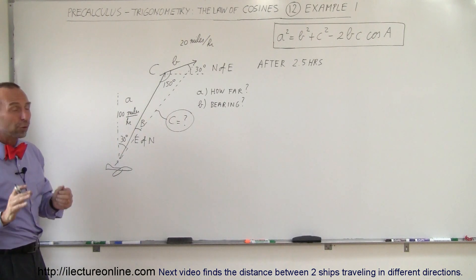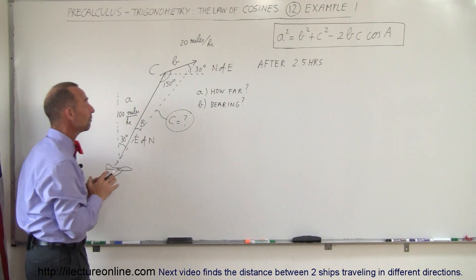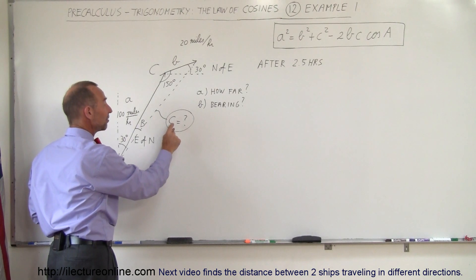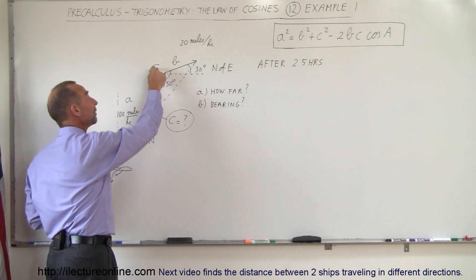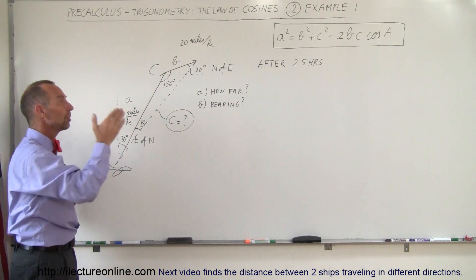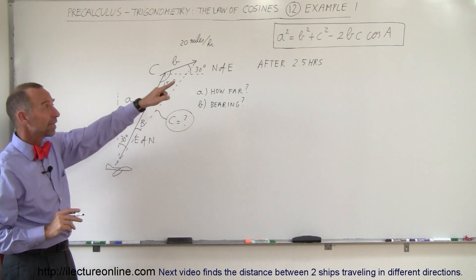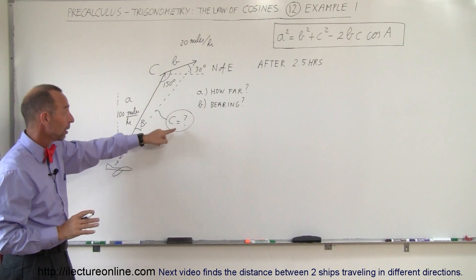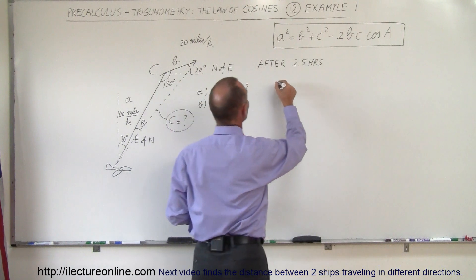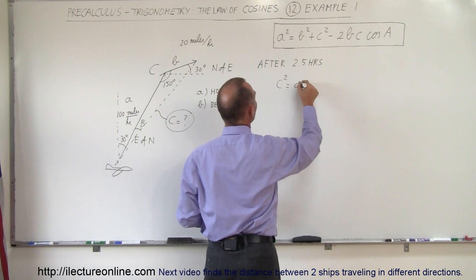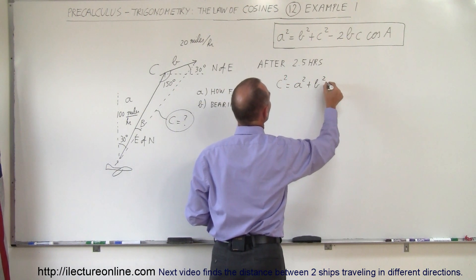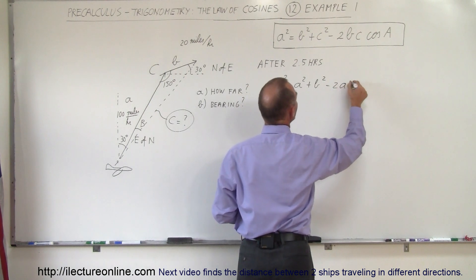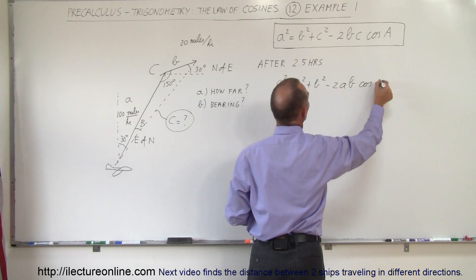Okay, so in order to be able to solve this using the law of cosines and we want to find side C, it is necessary to know the angle opposite to that side. Because what we're going to do is take this equation and write it in the format to solve for C, which means C squared equals A squared plus B squared minus 2AB times the cosine of C.